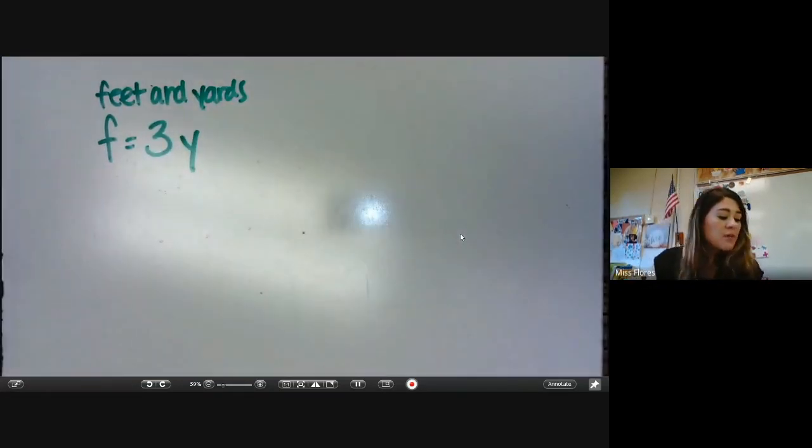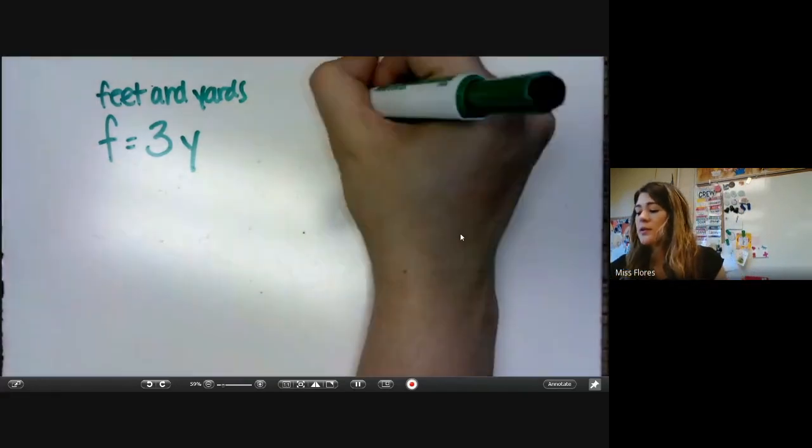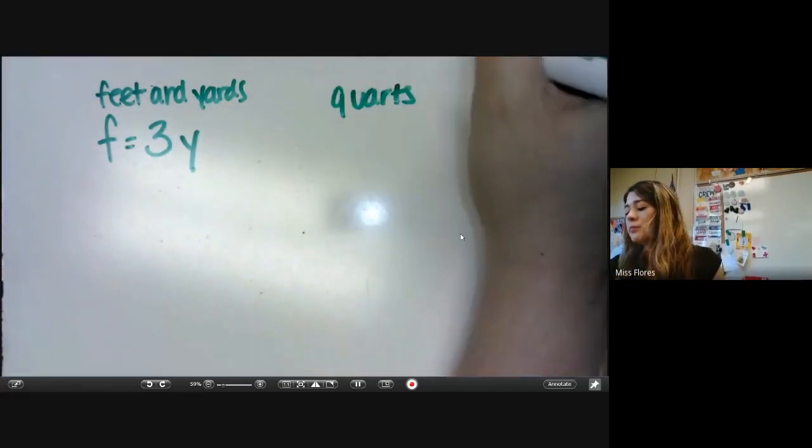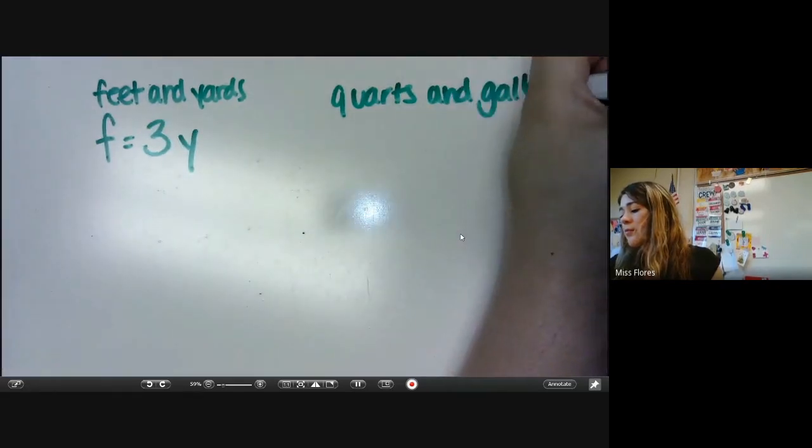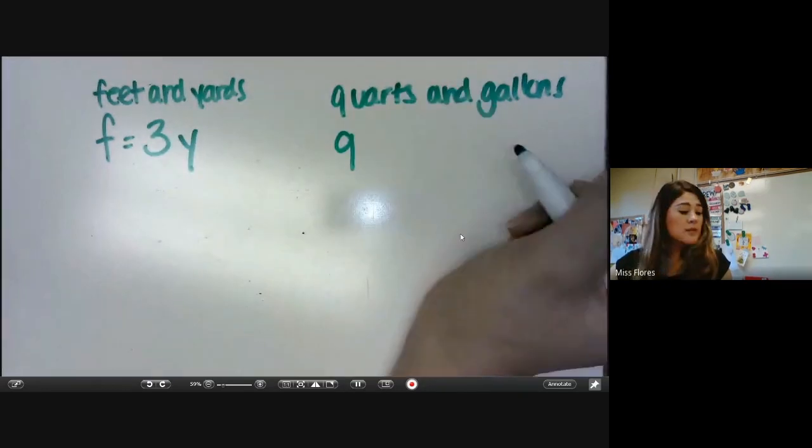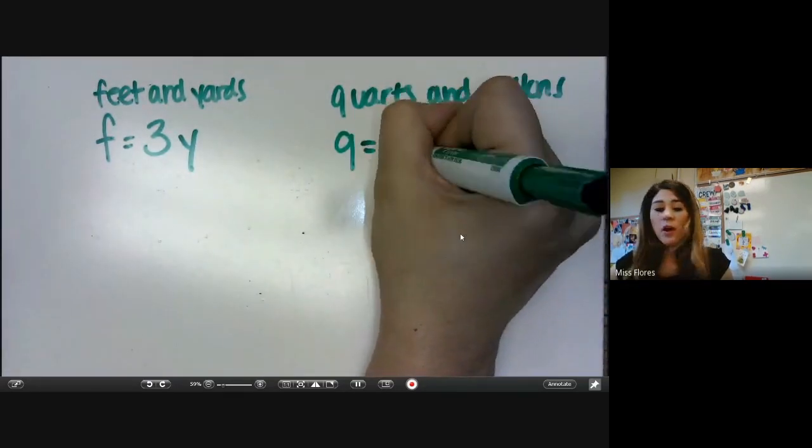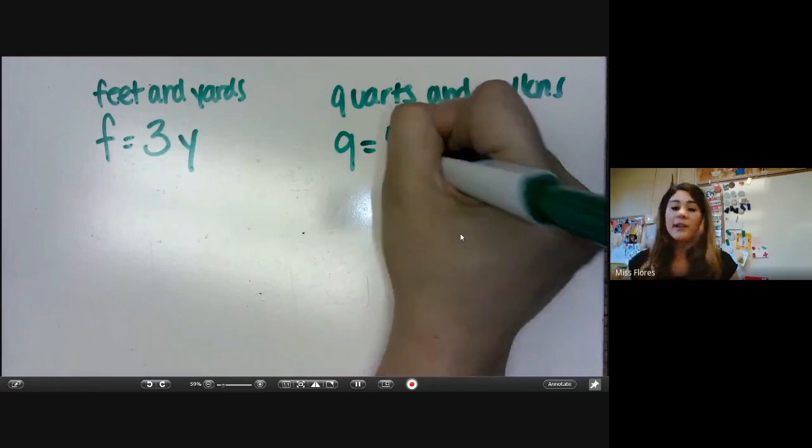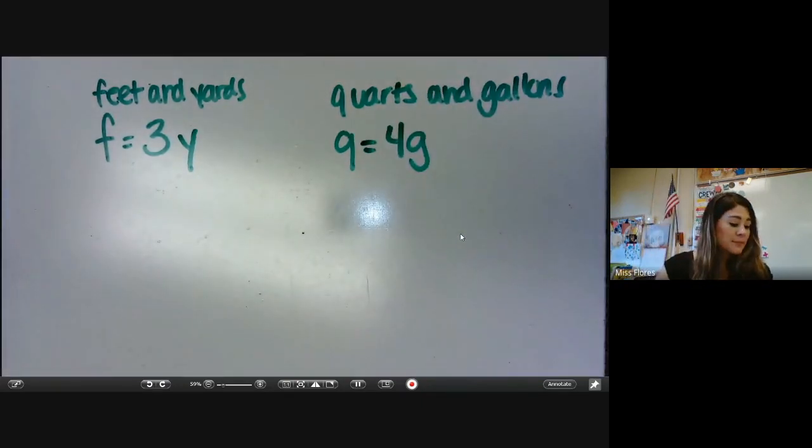The formula they give you is quarts and gallons. That means to figure out quarts, you can multiply 4 times any gallon, and you figure out quarts. So basically, any time there's a relationship between two quantities is constant, can be represented with a formula, meaning that if we know how much something goes into it, how many times, we could always make a formula for it.